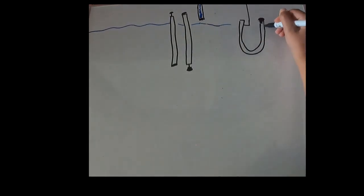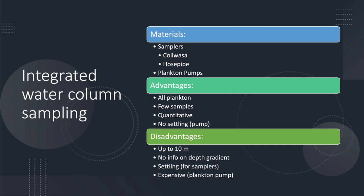You need fewer samples with this method, and it is still quantitative, because you are looking at the plankton from a known volume of water. A disadvantage to this method is that it can usually measure only up to around 10 meters in depth. You also do not get the same information about the plankton distribution throughout the depth gradients. Samples, once again, need to be settled in order to get a good count.